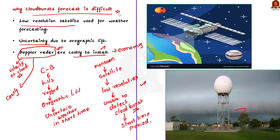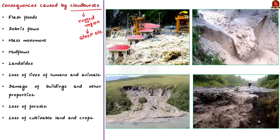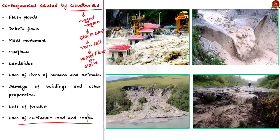Having seen this, let us now see the consequences of cloudburst. Cloudburst happens mainly in rugged terrain regions like the Himalayas, northeastern hills, and the Western Ghats, where the slopes are very steep. When rainfall happens, rapid flow of water occurs, causing a lot of destruction to property and human life. Since the top layer of soil is eroded, it also causes destruction to cultivable lands and crops.